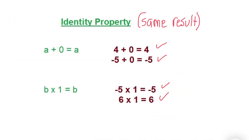The identity property of an integer is when you start with an integer and get the same result. For addition, you add 0. For multiplication, you multiply by 1.